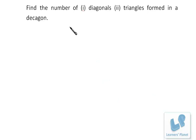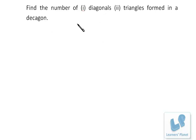Next question: find the number of diagonals and triangles formed in a decagon. For diagonals, it's straightforward: 10C2 minus 10.